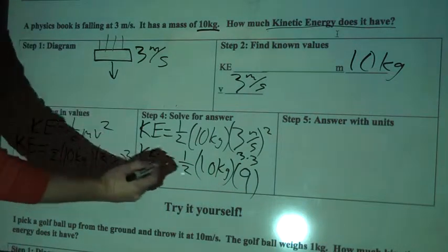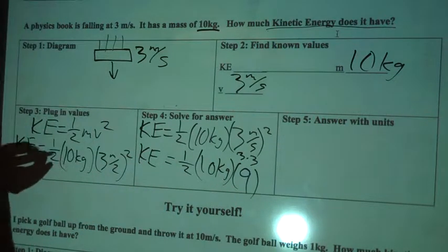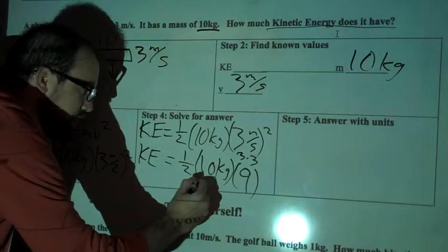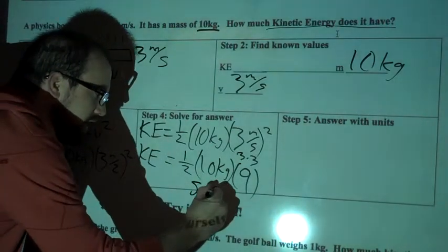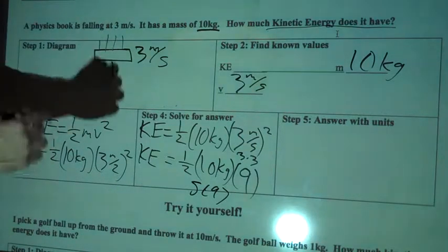So let's just do 1 half times 10, because that looks like the easiest thing to me. What's 1 half of 10? 5, right. So now we've got 5 times 9, and what's 5 times 9? 45.